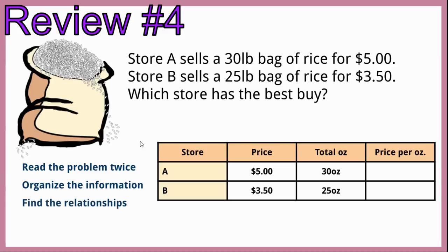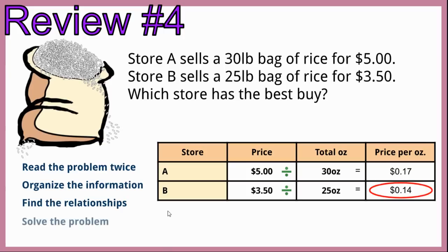We're going to find those relationships. The price divided by the total ounces gives us price per ounce. $5 divided by 30 ounces is $0.17 per ounce. $3.50 divided by 25 ounces is $0.14 per ounce. Since $0.14 is cheaper than $0.17, store B has the best buy.